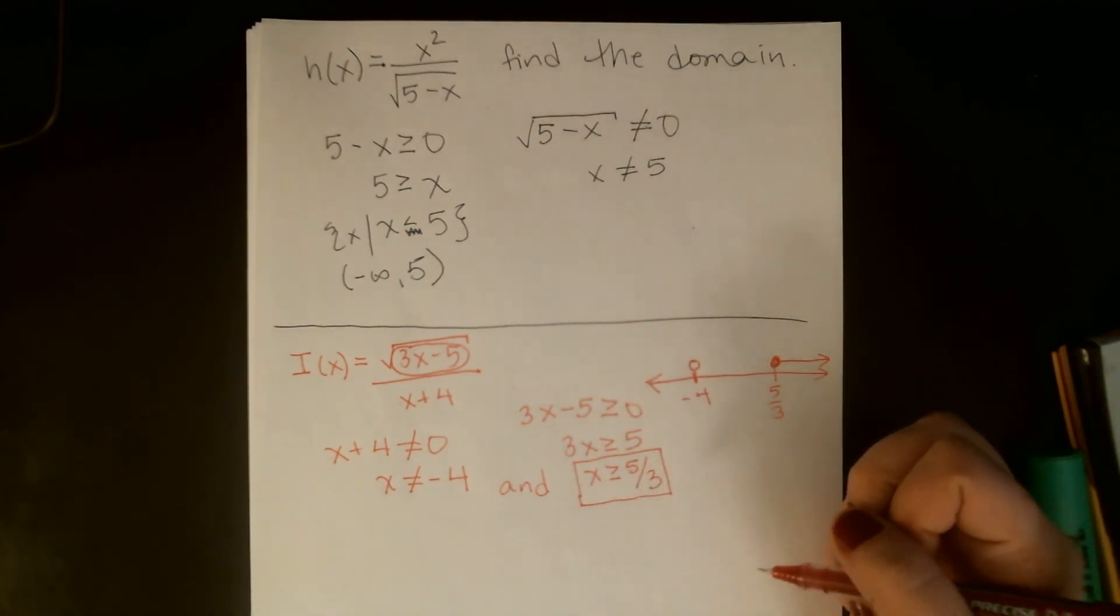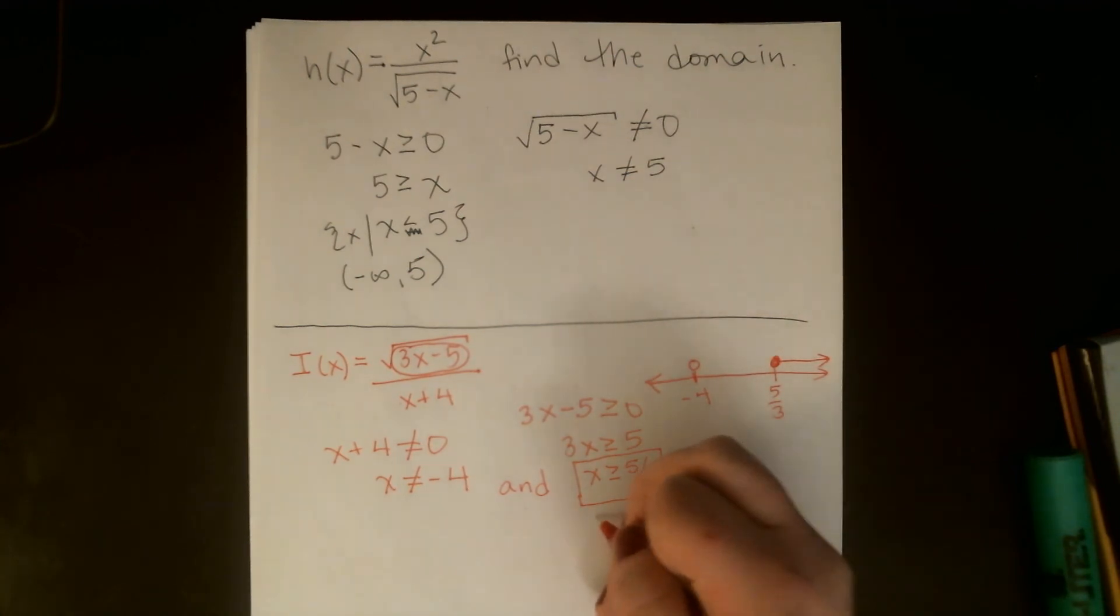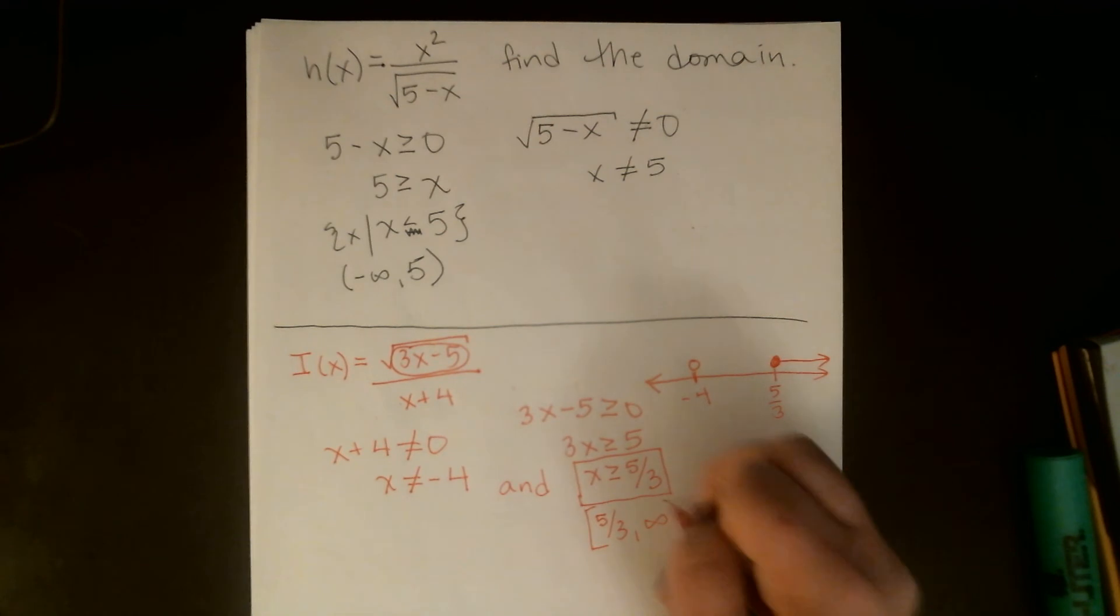Again, throw on set notation if you would like to. If you want to use intervals, we're starting at 5 thirds, and we're going to infinity. Okay, so if you get some combination of square roots and fractions, you're just going to have to think through carefully and make sure that you identify any values that will give you a problem with either one of the two. And you do want to try and simplify your statement if possible. It's not always possible to write it in any simpler way. But in this example, we definitely could. All right, thanks for watching.